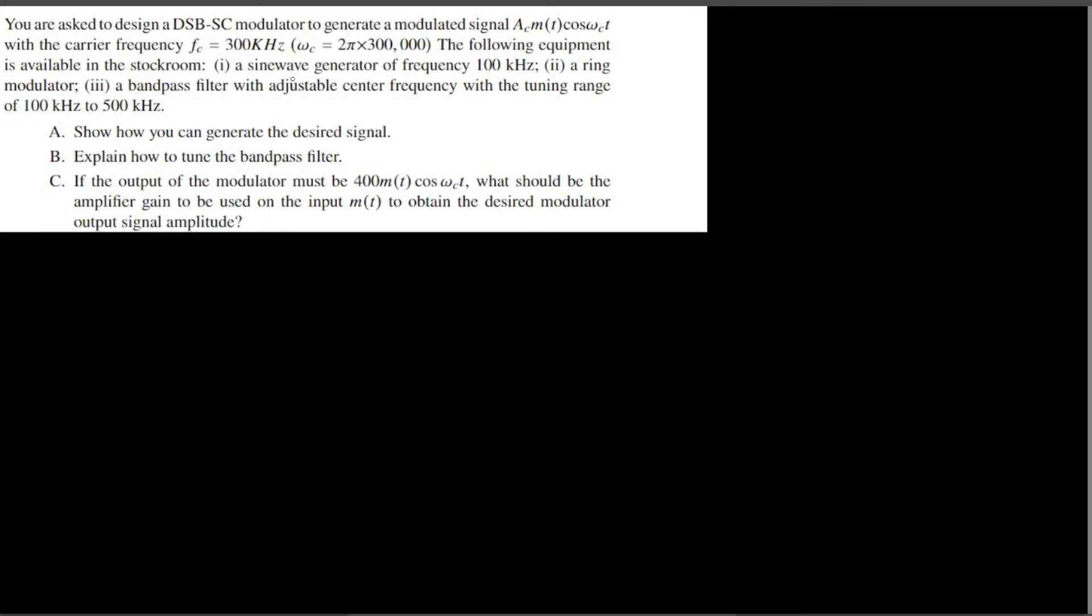One is a sine wave generator of frequency 100 kilohertz, the second is the ring modulator, and the third one is the bandpass filter with adjustable center frequency with a range of 100 kilohertz to 500 kilohertz. So how can you generate the desired signal?